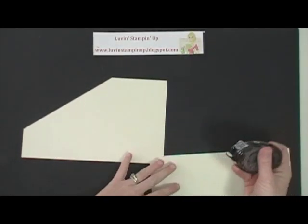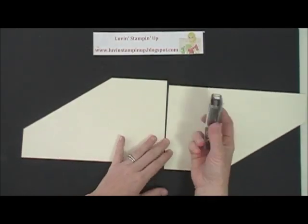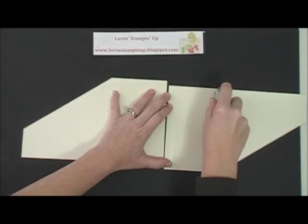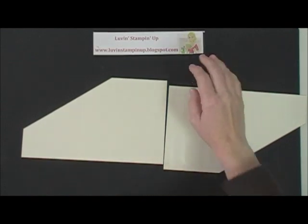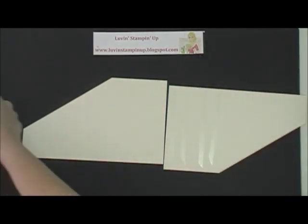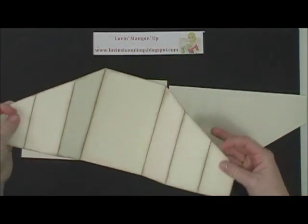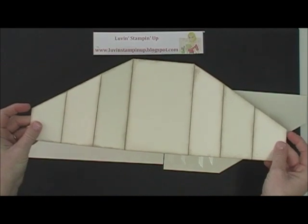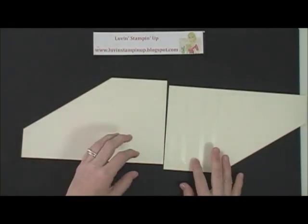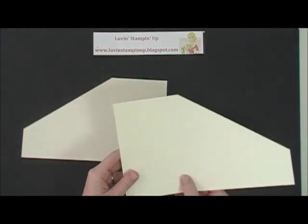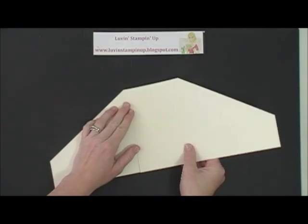So then all you have to do is put some adhesive on one side. Oh, I'm sorry - before you put the adhesive on one side, you're going to want to ink all the edges. I used crumb cake and I inked all the edges before I put them together. So now we're just going to put it together like so.